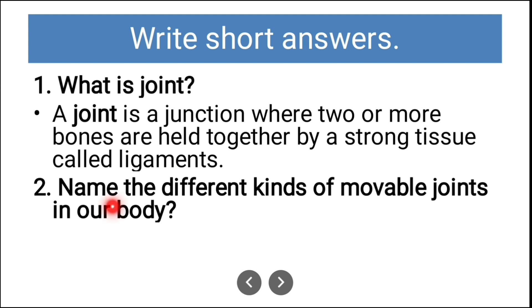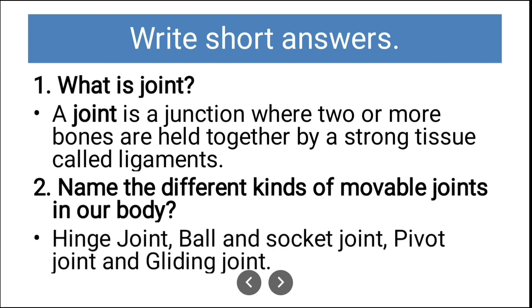Second short answer: Name the different kinds of movable joints in our body. The answer is hinge joint, ball and socket joint, pivot joint, and gliding joint. These are the different kinds of movable joints.